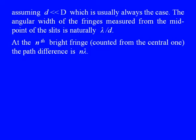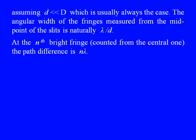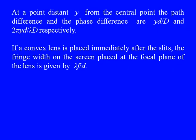We have assumed in this derivation that d is very small compared to D, which is usually always the case. If we are interested in the angular width, it is given by λ/d, measured from the midpoint of the slits. At the nth bright fringe counted from the central one (where the path difference is 0), the path difference is nλ. At a point distant y from the central fringe, the path difference is yd/D and the phase difference is (2π/λ)(yd/D).